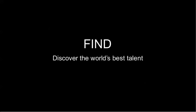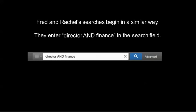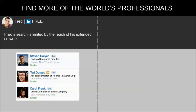Step one, as mentioned earlier, is finding the right talent. Fred and Rachel's searches begin in a very similar way — they start by entering Director and Finance in the search field. Now let's look at the results that Fred gets. Remember, Fred is using his personal LinkedIn.com account, which is free. As you can notice, he can only see and find candidates within his extended network, meaning he can only access up to his first, second, and third degree connections. He won't be able to see talent outside of this network, and the talent he is looking for might not even be in those search results.